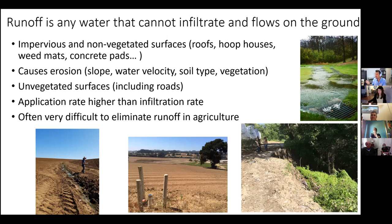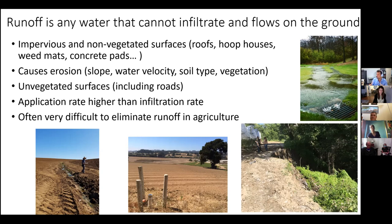Vegetation slows down the flow of water, avoids erosion because roots hold soil particles in place, and also provides surfaces for pesticides and sediment to get attached to. So vegetation is kind of the solution to all evil, and I will be talking about that a lot.